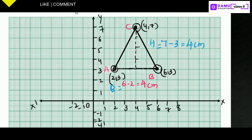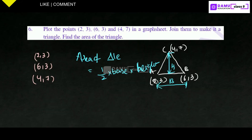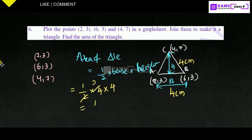So the base is 4 centimeters and the height is 4 centimeters. Area equals half into base into height: half into 4 into 4 equals 8 centimeters square. That is the area of the triangle. Thanks for watching, please subscribe.